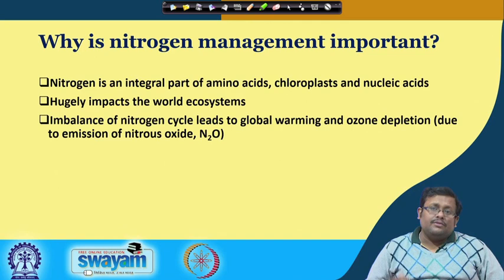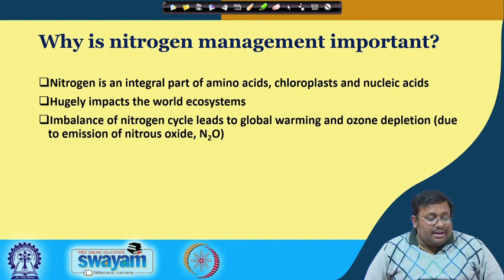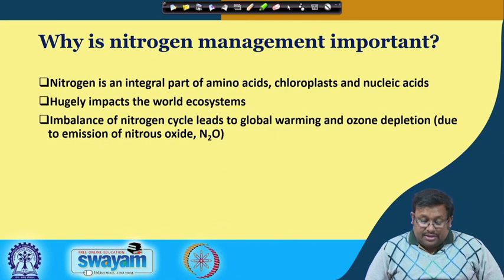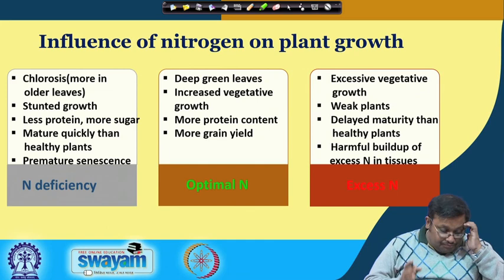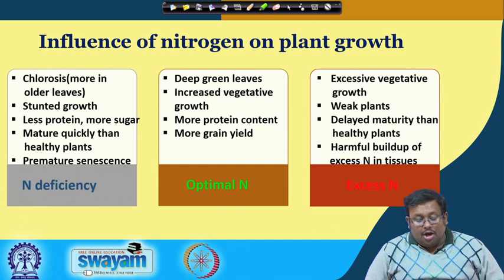Nitrous oxide forms due to the process of denitrification — we will see that process later on. Nitrogen is very important because without nitrogen the plant body cannot be constituted. Based on the abundance of nitrogen in the plant, we can divide their status as nitrogen deficiency, optimal nitrogen, and excess of nitrogen.